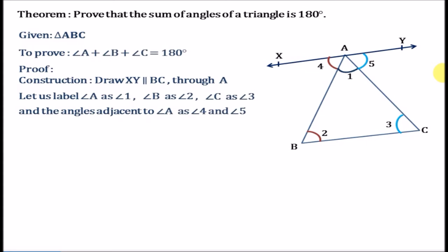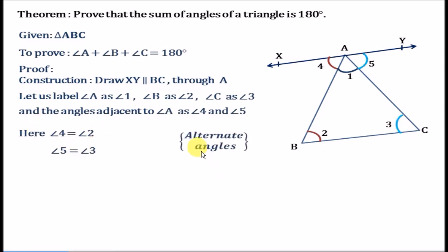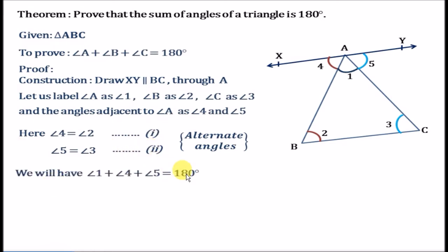Since XY is parallel to BC, we will have angle 4 equals angle 2 and angle 5 equals angle 3, as these are alternate angles. Let us label these as equation number 1 and equation number 2.